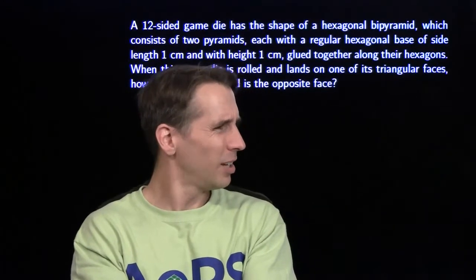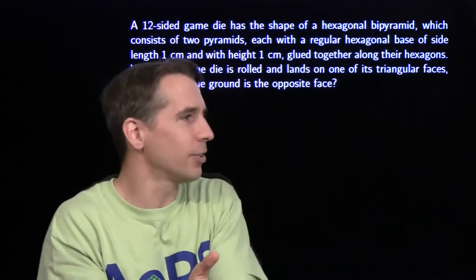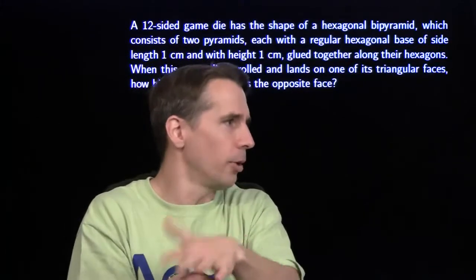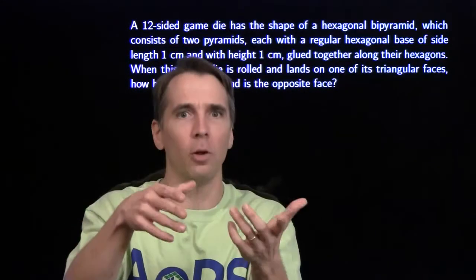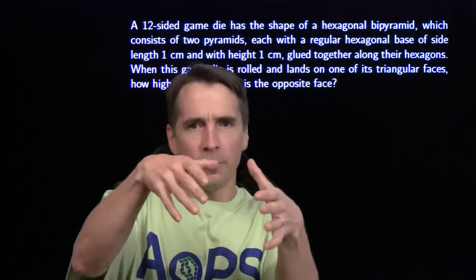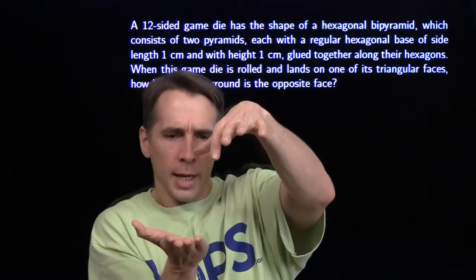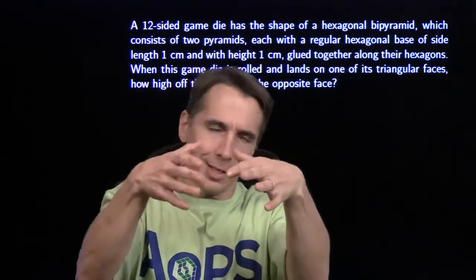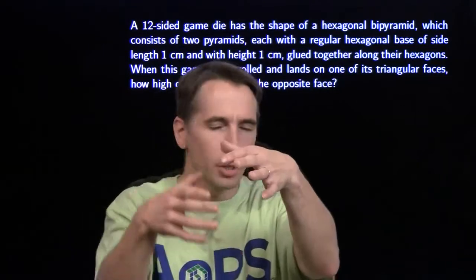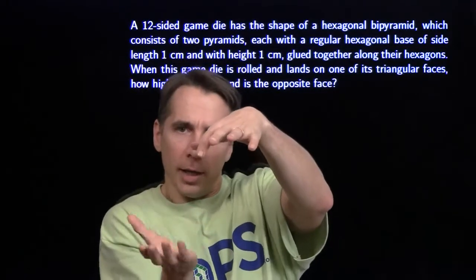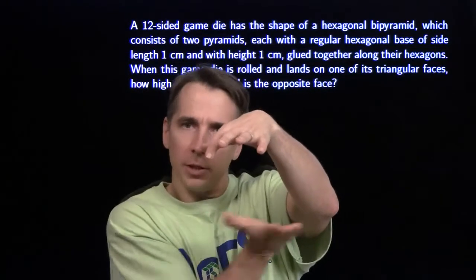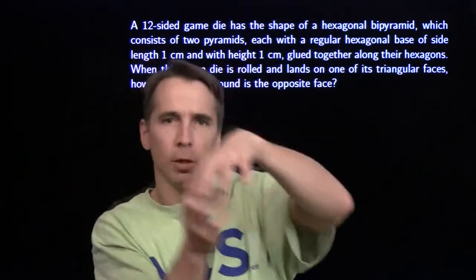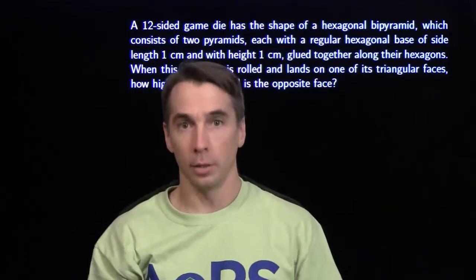It doesn't look like that — of course it's not going to stand on the point, right? It's a game die. You roll it, it's not going to stand on the point, that's obvious. It's going to fall over, and it's going to land on one of these triangular faces. So it's not going to stand up on the point. It's going to fall over and you're going to have this triangular face on the ground. The hexagon will be kind of like this, and it's going to come to a point up here, come to a point down there.